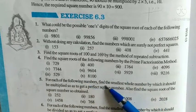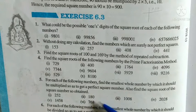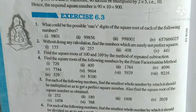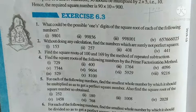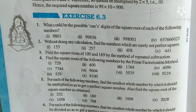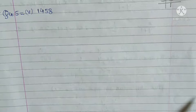For each of the following numbers, find the smallest whole number by which it should be multiplied so as to get a perfect square number. In question 5, we find which number to multiply so that it becomes a perfect square, and then we can find the square root. Question 6 will involve finding which number to divide by to get a perfect square.